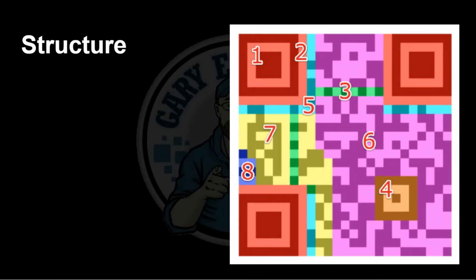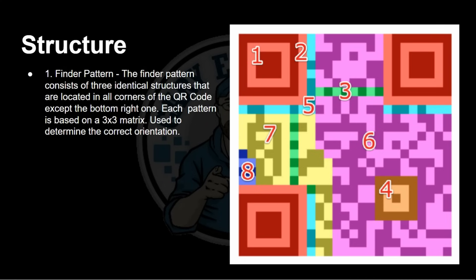Now let's look at the structure of a QR code so you understand the technical details. There are different areas to it, color-coded here, based on an interesting research paper linked in the description. You might have thought there were just two or three areas you could spot, but there are actually eight separate areas. Let's go through them.